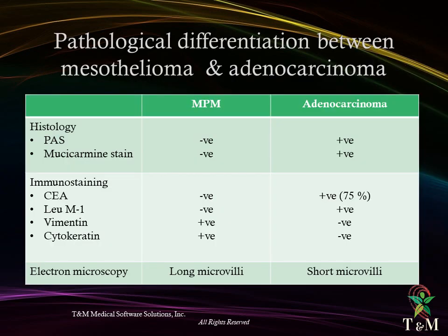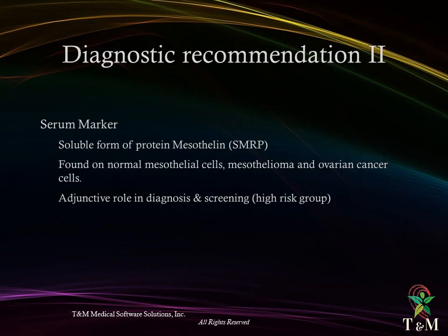Pathological differentiation between mesothelioma and adenocarcinoma: PAS and mucicarmine stains are positive with adenocarcinoma. Immunostaining shows positive vimentin and cytokeratin in mesothelioma, while CEA and LU-M1 are positive in adenocarcinoma. Serum marker: the soluble form of protein mesothelin, found in normal mesothelial cells, mesotheliomas, and ovarian cancer, is used in an adjunctive role in diagnosis and screening of high-risk groups.